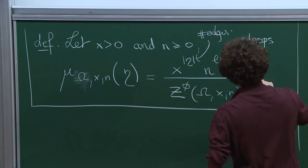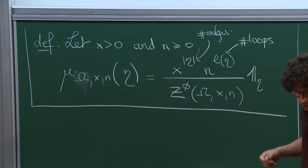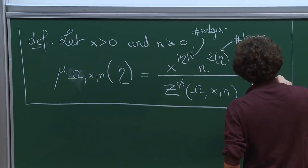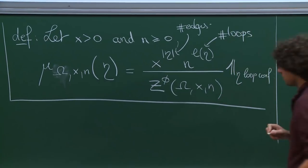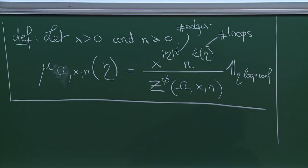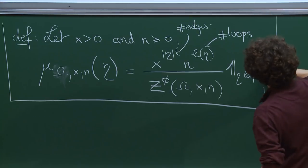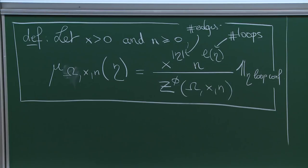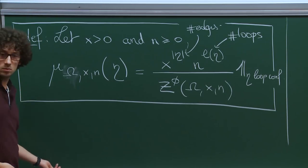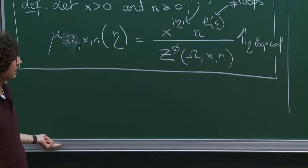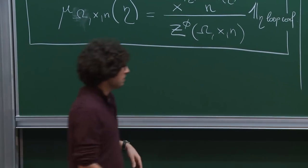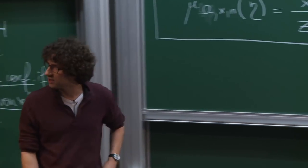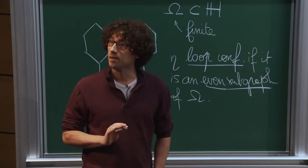Remember that this distribution is really only on loop configurations — it gives me a random loop configuration on Omega. Let me, before studying this in full generality, discuss a few specific examples.